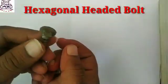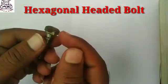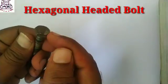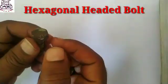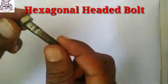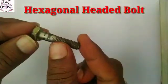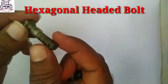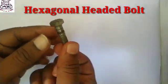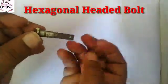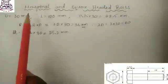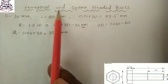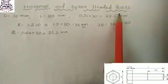Hexagonal headed bolt. This is the hexagonal headed bolt having six sides. This is the complete hexagonal headed bolt and this one is the threading portion. Please see the real diagram on screen.